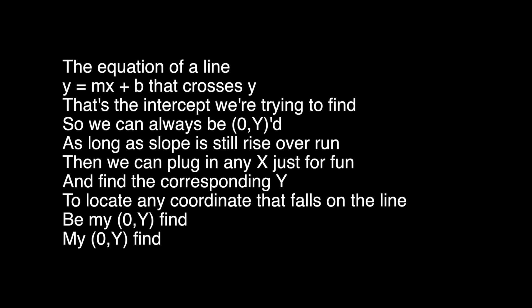The equation of a line: y equals mx plus b, that crosses y. That's the intercept we're trying to find. So we can always be zero comma y. As long as slope is still the rise over run, then we can plug in any extras for fun and find the corresponding y. To locate any coordinate that falls on the line — be my zero comma y find. My zero comma y find.